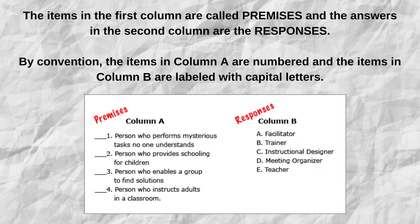The items in the first column are called premises and the answers or options in the second column are called responses. By convention, the items in column A are numbered and the items in column B are labeled with capital letters.